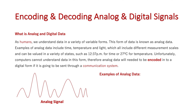Let's look at some forms of analog data. Voice and sound are analog — the volume we speak at, the pitch we speak at, the speed we speak at. Temperature can change during the day based on the sun and time of day. Time itself is a variable. Light — the light levels within a room or outside — these are all varying variable values.